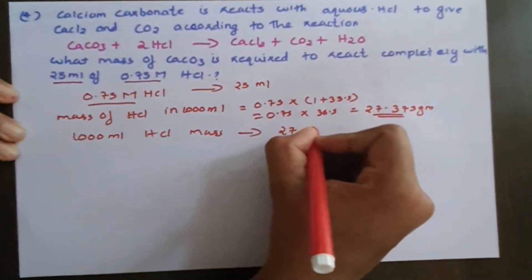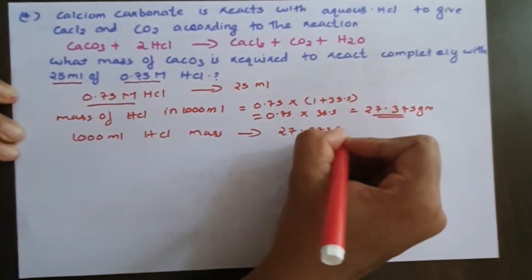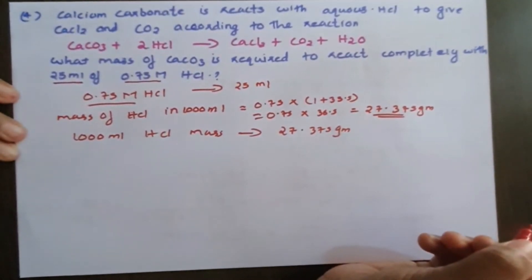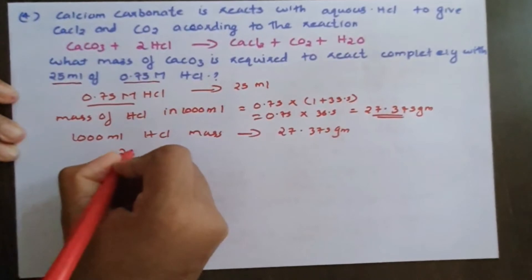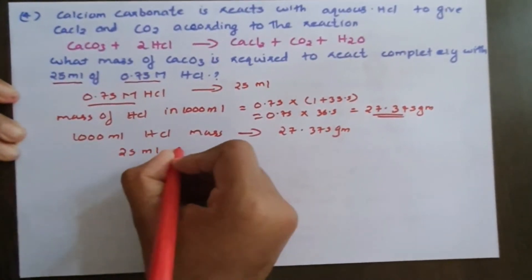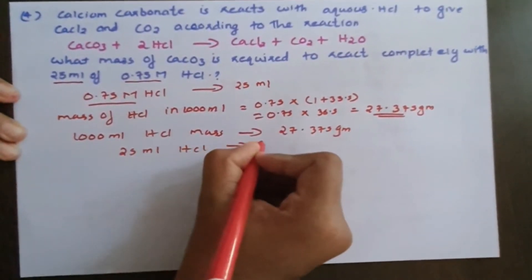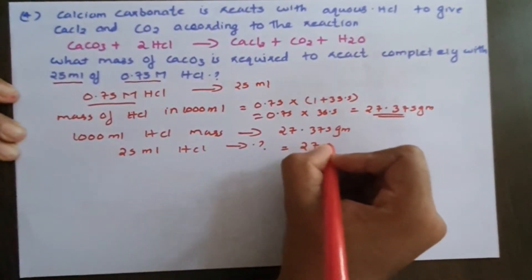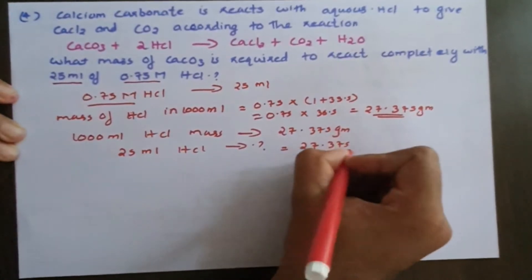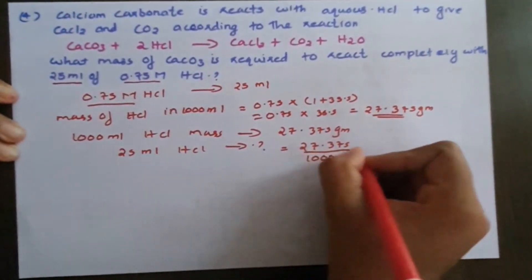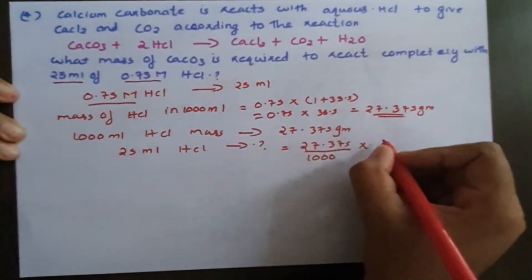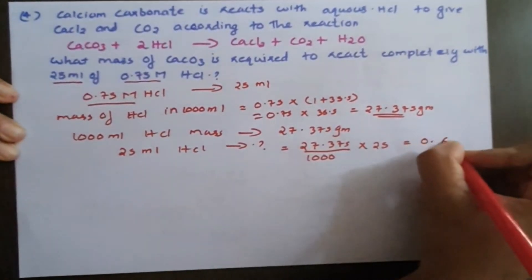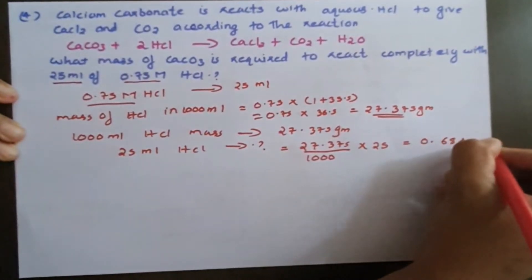That gives 27.375 g for 1000 mL of HCl. For 25 mL of HCl, that is 27.375 divided by 1000, multiplied by 25. How much is it? That gives 0.6844 g.